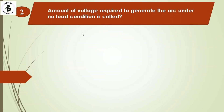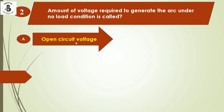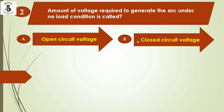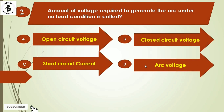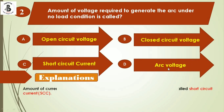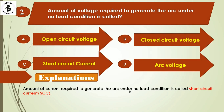The next question: the amount of voltage required to generate the arc under no-load condition is called — Option A: open circuit voltage, Option B: closed circuit voltage, Option C: short circuit current, and Option D: arc voltage. As per practical concern, the amount of current required to generate the arc under no-load conditions is called short circuit current. The right answer is Option C.